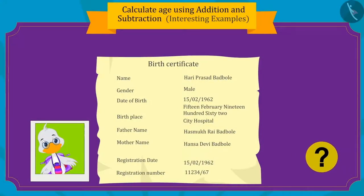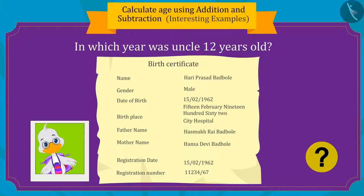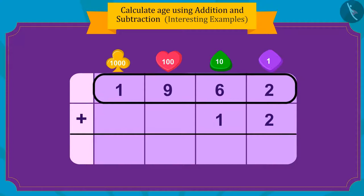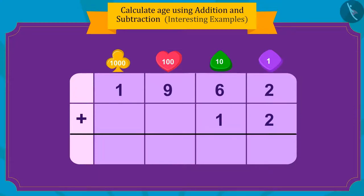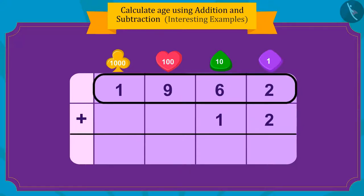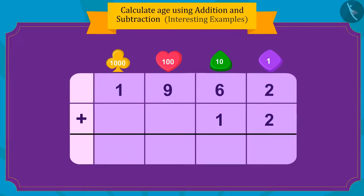Children, can you tell in which year Uncle was 12 years old? If you want, you can pause the video and find the answer. Well done, kids — you have found the right answer! Uncle was born in 1962, and to find out in which year he was 12 years old, we need to add 12 to 1962.